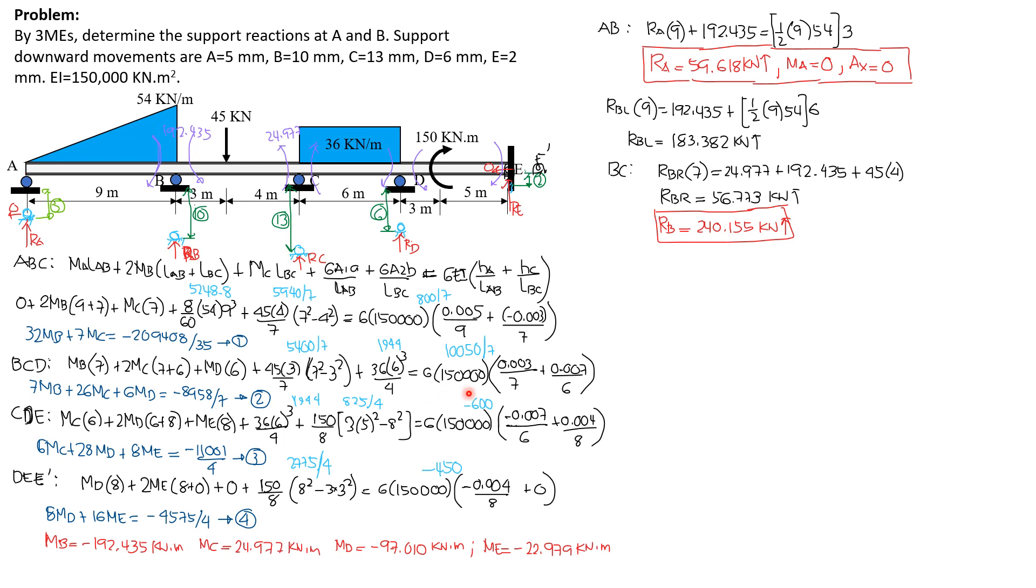Then, the value of 6 area 2B over L2 or LCD is WL cube over 4, so 36, 6 cube over 4. Then equals 6EI, 6 times 150,000. The reference this time is C, so B is 3mm above C, so we have quantity 0.003 over 7. Then D is above C by 7mm, so that's why we have plus 0.007 over length of CD, which is 6, and the value is 10,050 over 7. Combining the constants and simplifying, we have for our second equation, 7MB plus 26MC plus 6MD equals negative 8958 over 7. Call that equation 2.